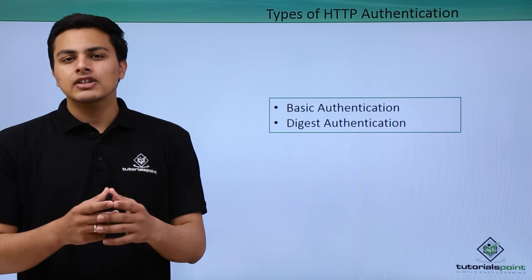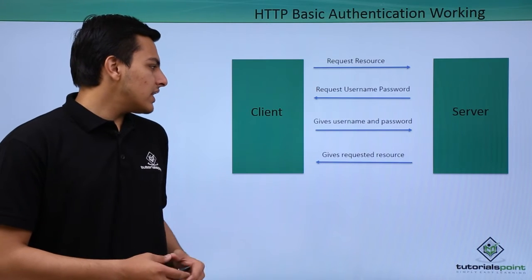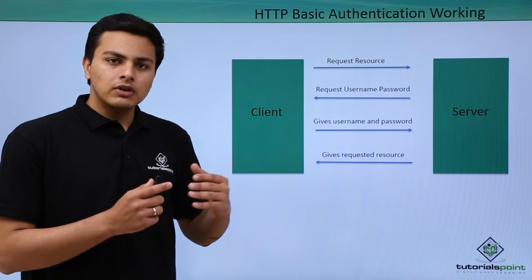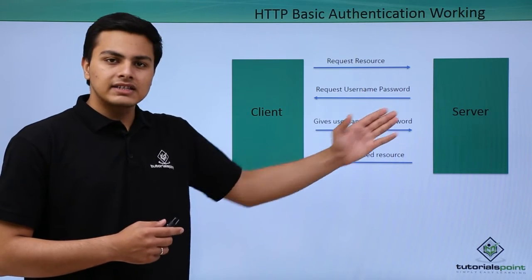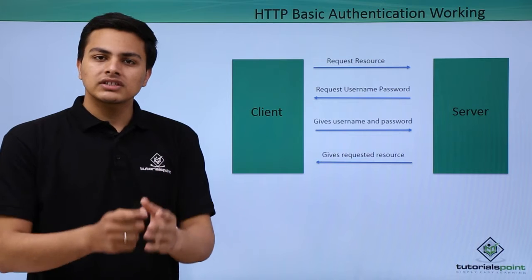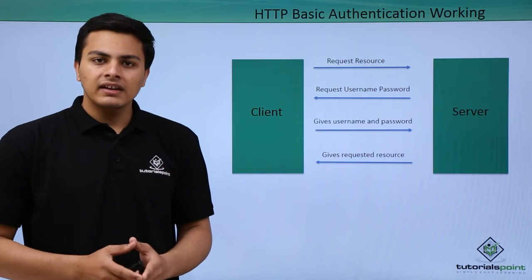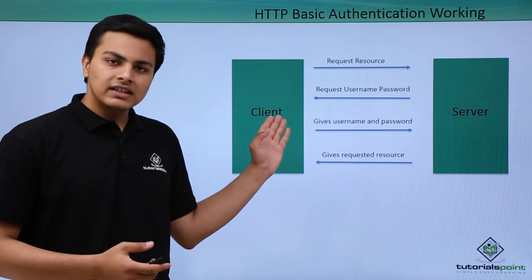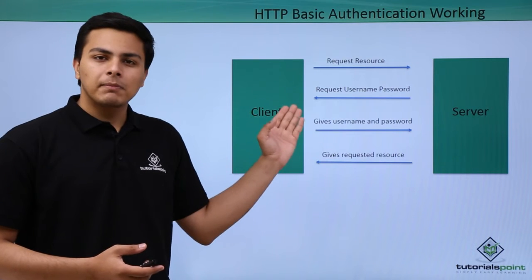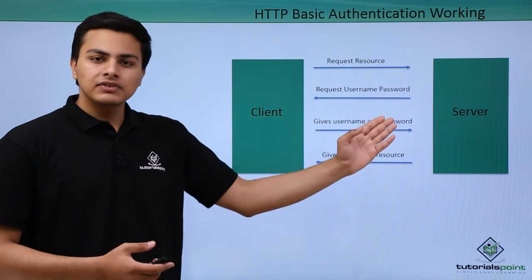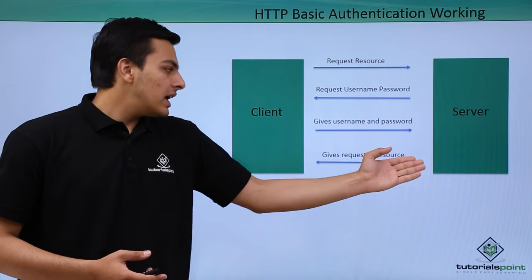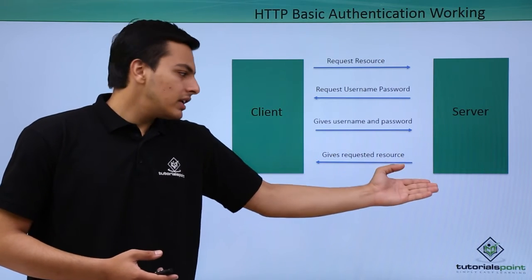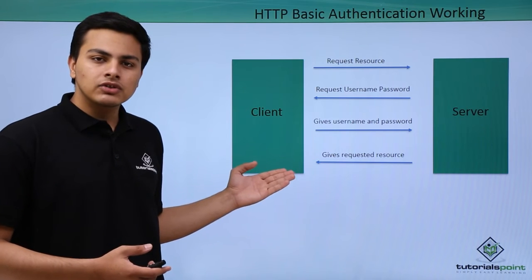Now let us see how HTTP basic authentication works. Here is our client and here is our server. First, the client sends a request for a particular resource to the server. If that resource is protected, the server requests the client to provide a username and password. The client then gives the username and password, and after receiving them, the server gives the requested resource to the client.